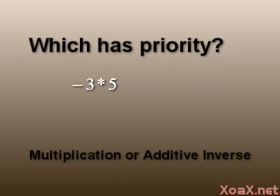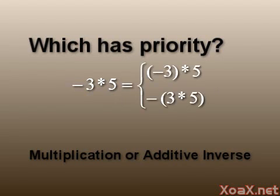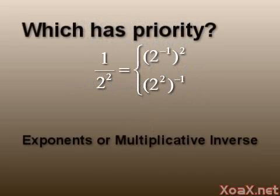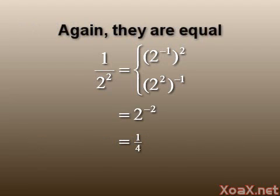The natural question that arises is that when we see minus 3 times 5, is this equal to negative 3 times 5, or the negative of 3 times 5? The answer is that it doesn't matter, since both are equal to negative 15. Likewise, 1 divided by 2 to the 2 could be 2 to the negative 1 to the 2, or 2 to the 2 to the negative 1, and both are equal to 2 to the negative 2, by our properties of exponents, which equals 1 fourth.